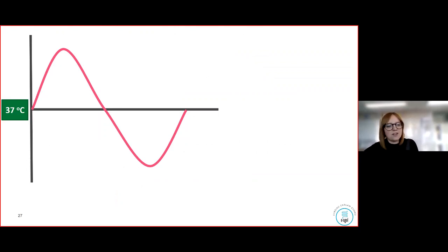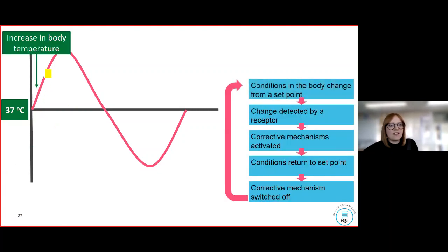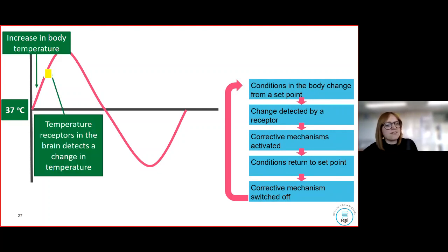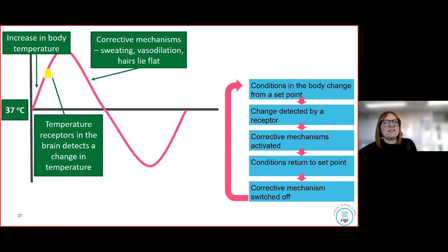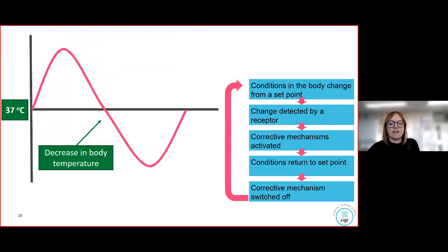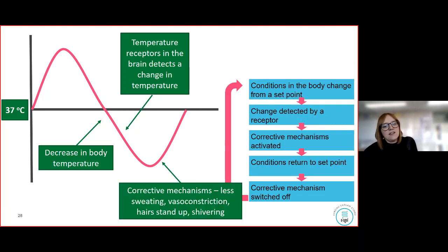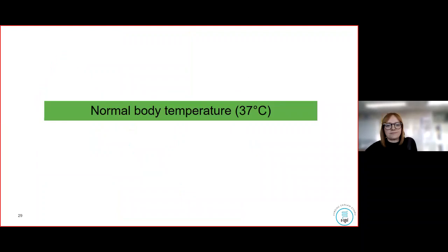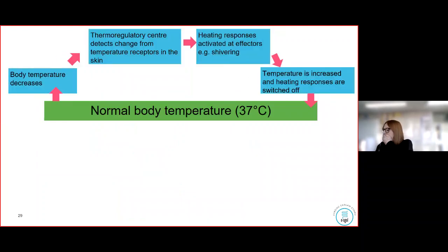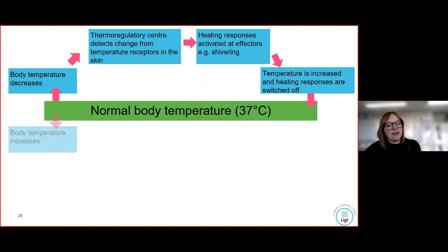Here's a graph showing a negative feedback mechanism with 37 degrees as the normal. We can see that when body temperature increases, temperature receptors in the brain detect the change, and a corrective mechanism — sweating, vasodilation, or hairs lying flat — comes into play. On the other side, a decrease in body temperature causes corrective mechanisms to restore normal temperature. The same pattern is shown in a flow map.